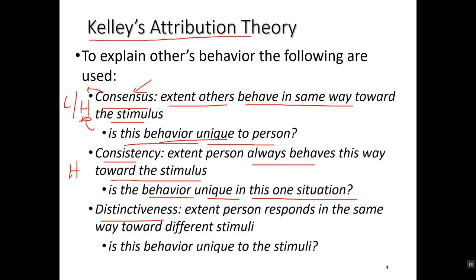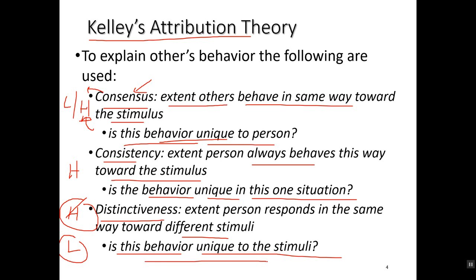Finally, distinctiveness — the extent to which the person responds in the same way towards different stimuli. If you see me petting my cat but I don't interact with other people's cats and stay away from them, that behavior is very distinct — high distinctiveness. But if you see me going up to every cat I see and petting it, that's low distinctiveness, because my behavior of petting my cat is not really distinct at all.